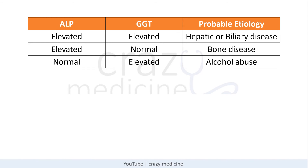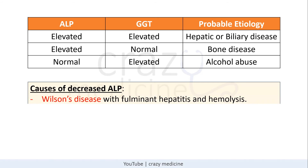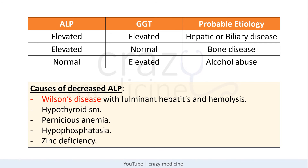There are certain diseases associated with decreased alkaline phosphatase. The classic example is Wilson's disease with fulminant hepatitis and hemolysis, where ALP is severely reduced. In hypothyroidism, pernicious anemia, hypophosphatasia, and zinc deficiency, ALP is mildly to moderately reduced.